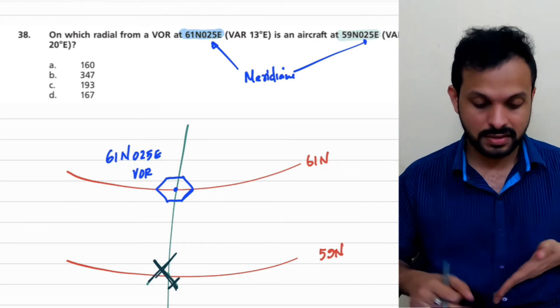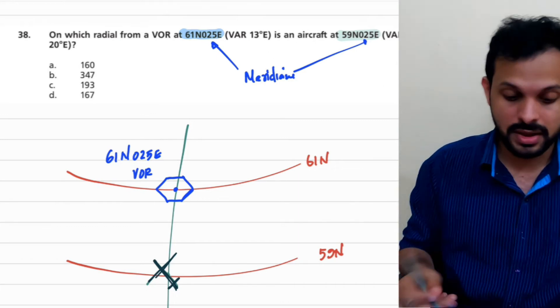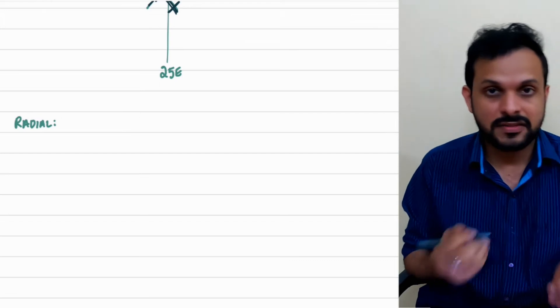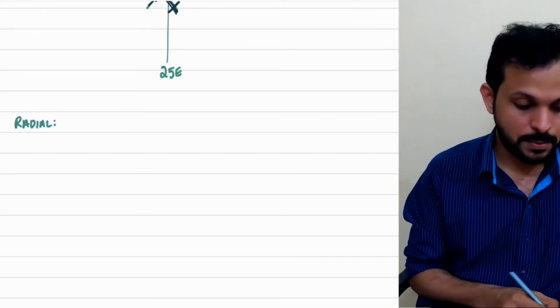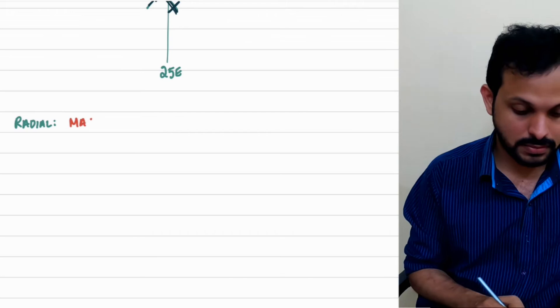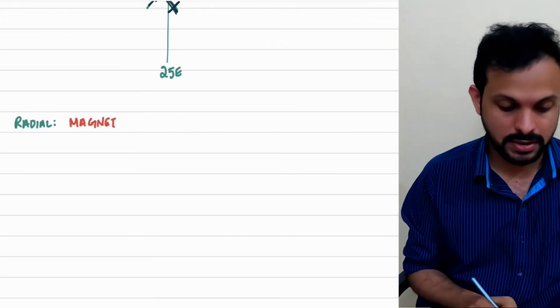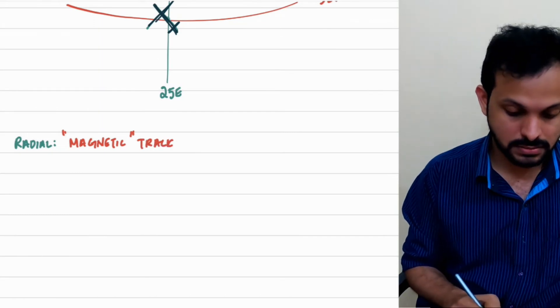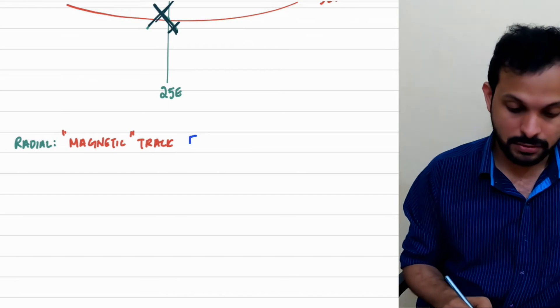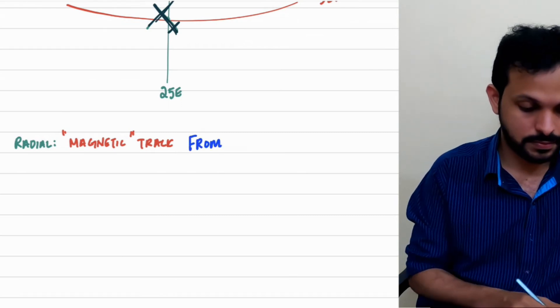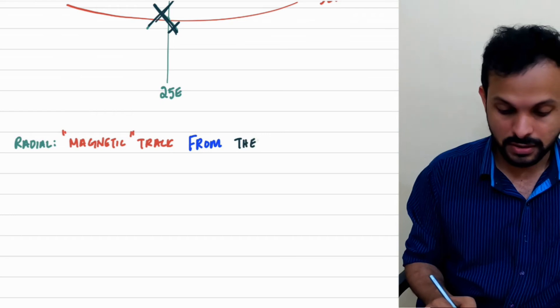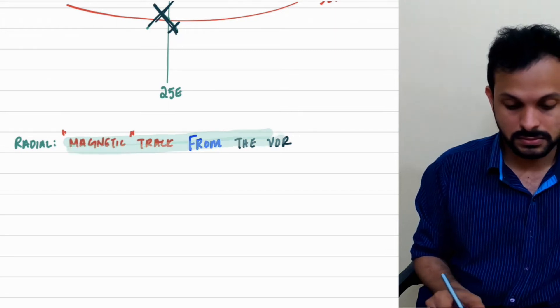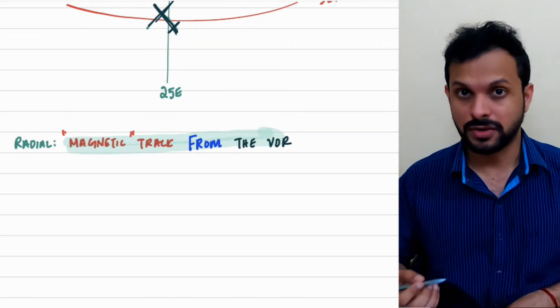Now you'd have to find out on what radial is the aircraft on. It's pretty simple right. You can see the radial that is there is always a magnetic track from the VOR. So let's write that down here. So the basic definition of radial has to be understood here. Point number one: it is magnetic and not true. That's what it means. It's a magnetic track. Now another point you understand here is it's always from the VOR. Very very important.